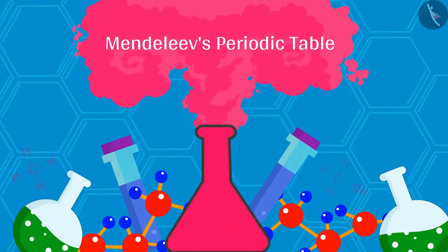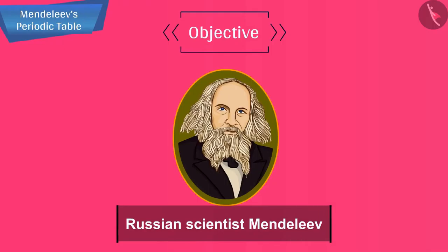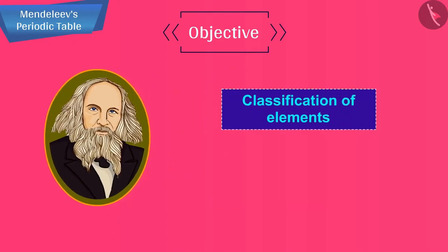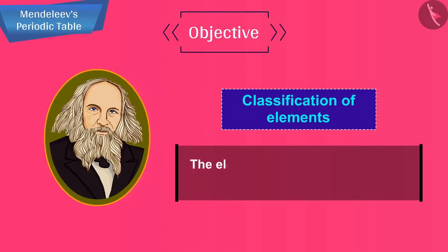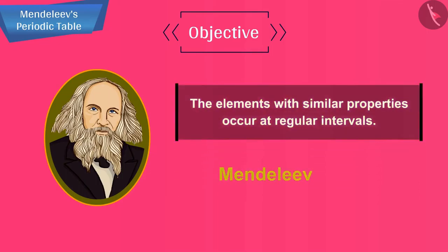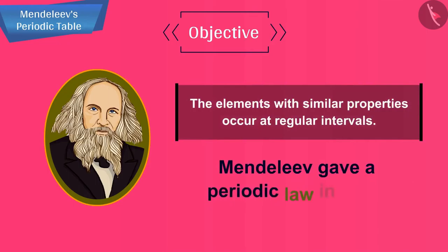In this video session, the topic we are going to cover is Mendeleev's periodic table. Let us start with the story of Russian scientist Mendeleev. While he was working on the classification of elements, he found that elements with similar properties occur at regular intervals. Based on this observation, Mendeleev gave a periodic law in 1869.